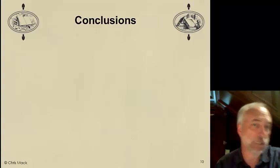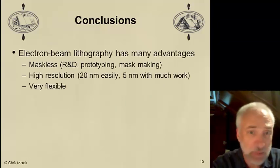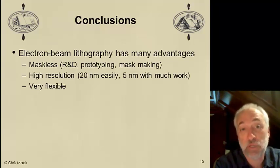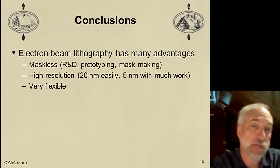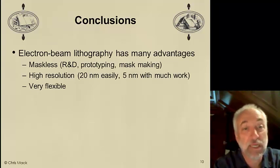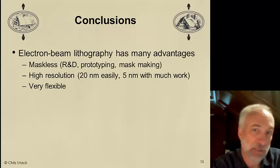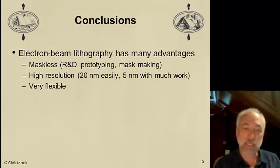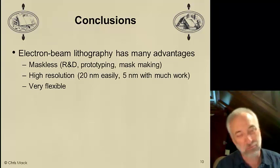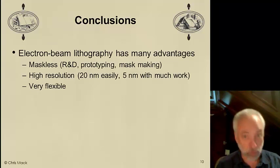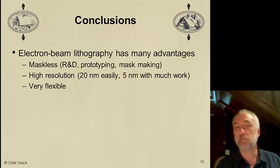Let's conclude what we've learned about e-beam lithography over the last two lectures. E-beam lithography has many advantages. First, it is maskless — a direct writing scheme controlled by a computer. This makes it great for R&D, because you can quickly change the pattern being written. It's good for prototyping and for mask making, where you don't have a master pattern to begin with. It is high resolution — it's easy to get 20 nanometers. People achieved 20 nanometer resolution 40 years ago in the 1970s. We can get down to 5 nanometers as well, though it's very difficult, often requiring printing on membrane substrates to limit backscattering and using very high energies to limit forward scattering. It's very flexible, which is its main advantage in the R&D world.